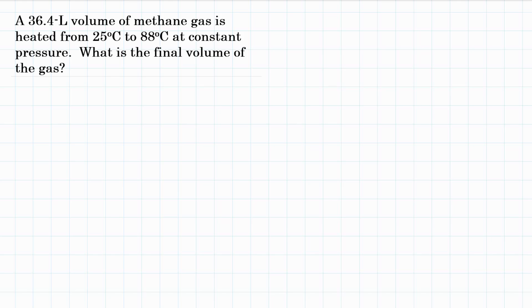A 36.4 liter volume of methane gas is heated from 25 degrees Celsius to 88 degrees Celsius at constant pressure. What is the final volume of the gas?